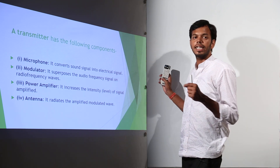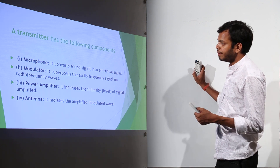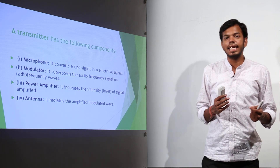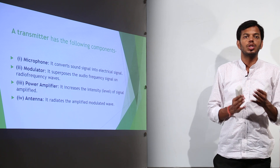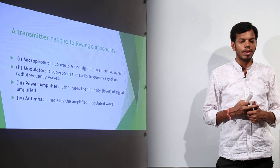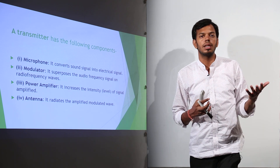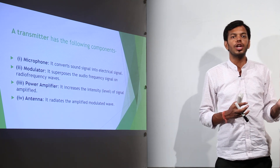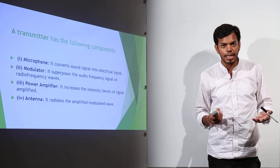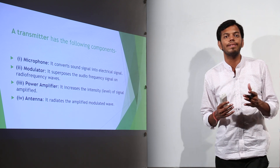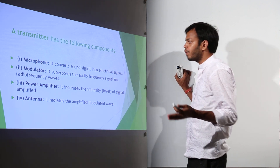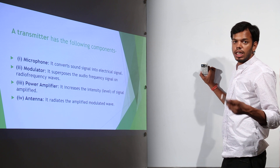Then there is the modulator, which is the main part of today's lecture. A signal cannot be directly sent over long distances due to many flaws, so it has to be superimposed onto something else and then sent so it can reach the receiver. For example, a person cannot walk from here to Delhi — it's very long — but if you make that person sit in a car, the car will get there. Similarly, the audio signal is superimposed onto a very strong high-frequency signal. The modulator superimposes the audio frequency signal onto radio frequency waves.